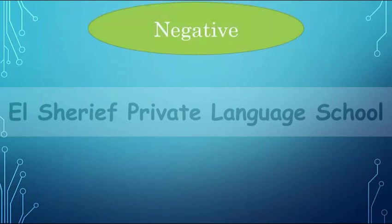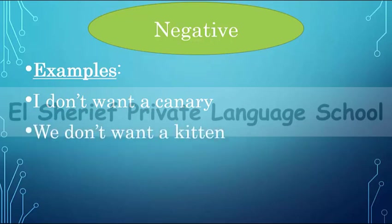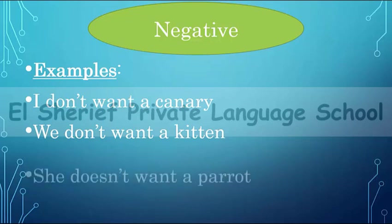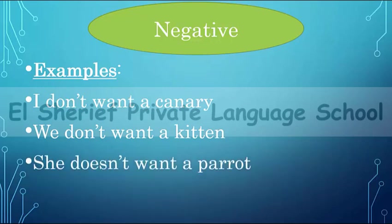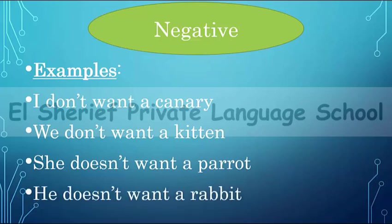Now look at the negative form. The first example: I don't want a canary. The second: we don't want a kitten. The third: she doesn't want a parrot. And: he doesn't want a rabbit.